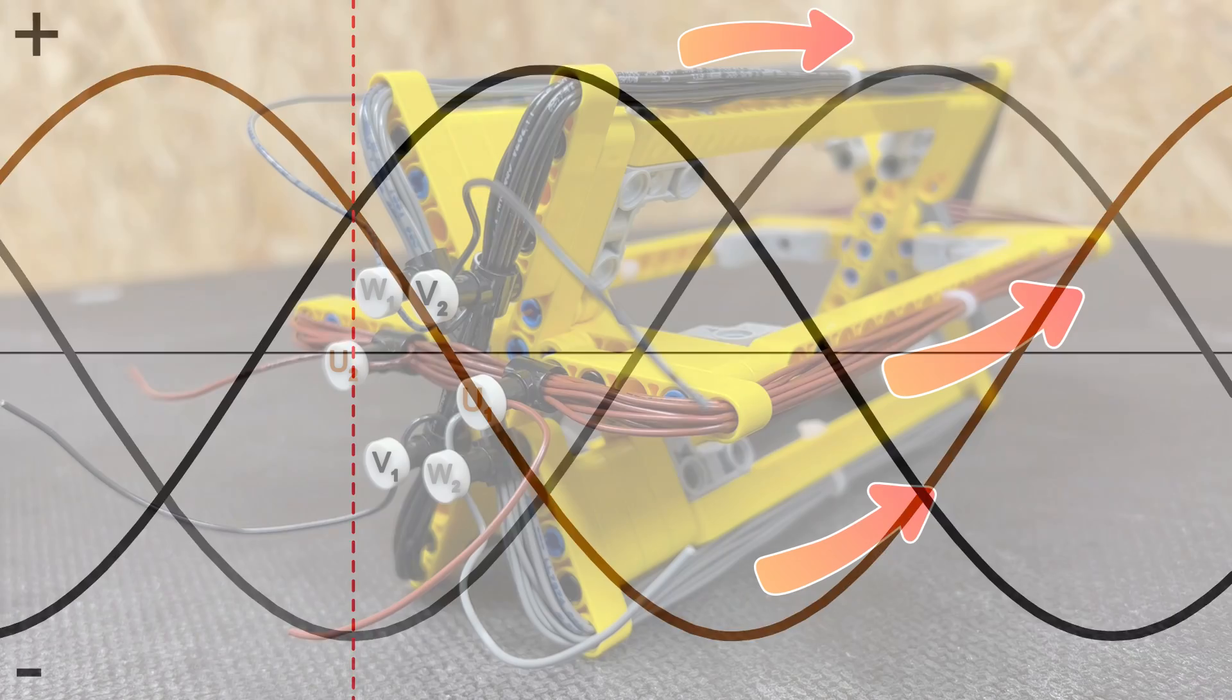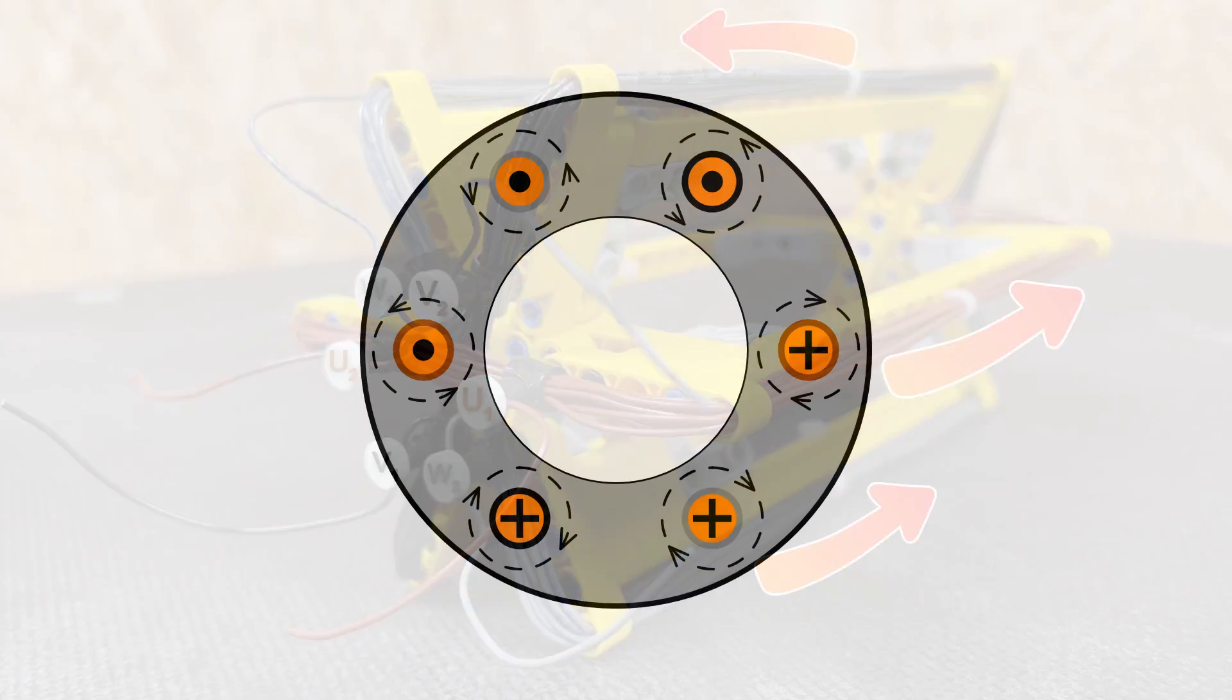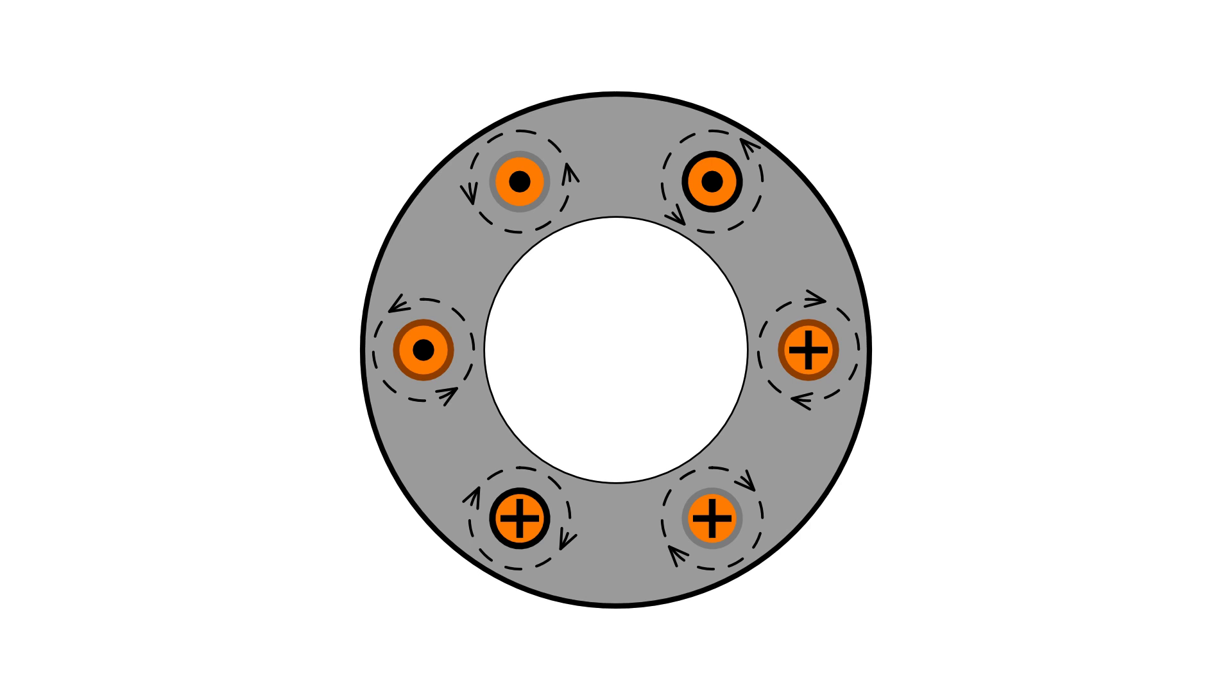So how does this affect the current into the motor? Well if we swap the direction of current in our V winding it will also change the polarity of the magnetic field around that conductor making the whole magnetic field look like this.